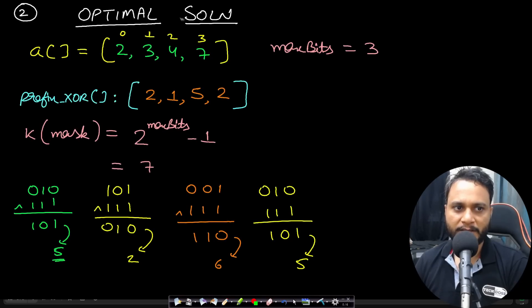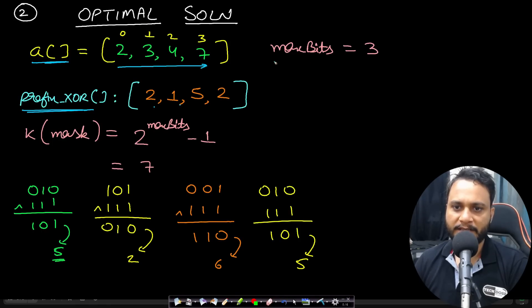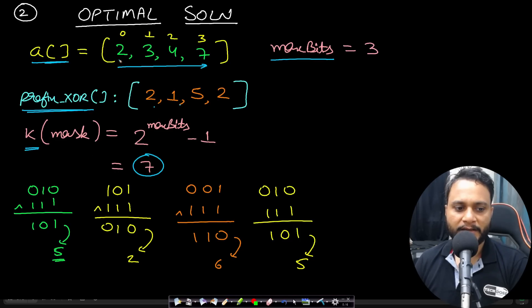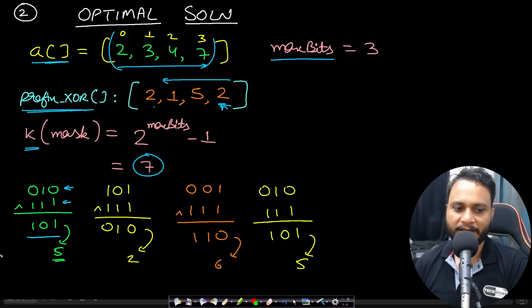Using these two optimizations, here is the optimal solution. For array 2, 3, 4, 7 we calculate prefix XOR left to right, getting 2, 1, 5, 2. With max bits = 3, the mask K is always 7 (all set bits). We iterate from right to left through the prefix XOR array. For prefix XOR value 2, XOR with all set bits gives the max K recorded in the answer. Similarly for 5, 1, and 2. The resulting answer array is 5, 2, 6, 5.